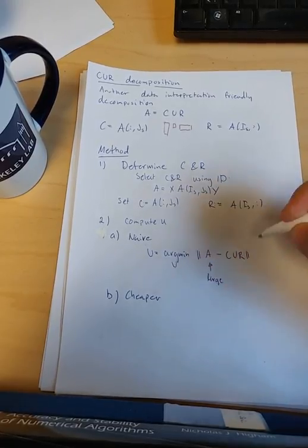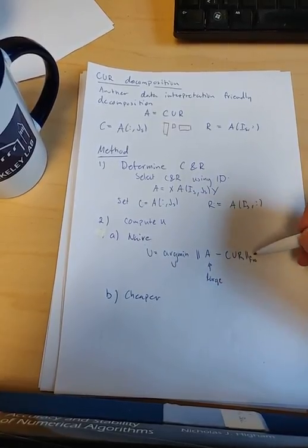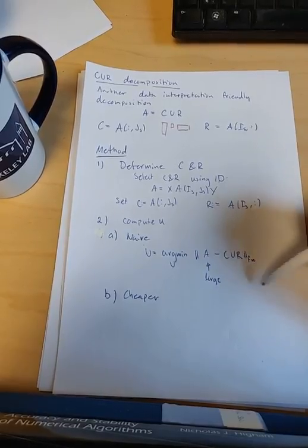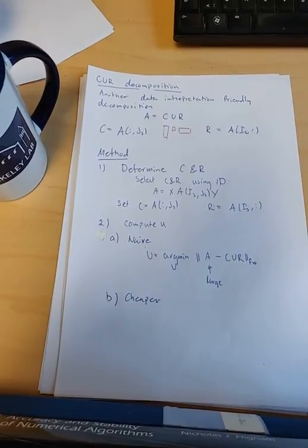So we try to find the U that minimizes this. Note here that this is a large matrix, so in general, this will be very expensive. And if you use the Frobenius norm, you can write down the solution quite easily as a standard least squares problem. You can in principle solve it, but it's a large problem.